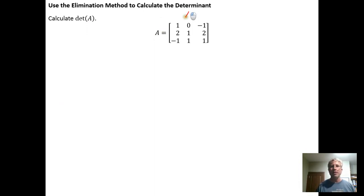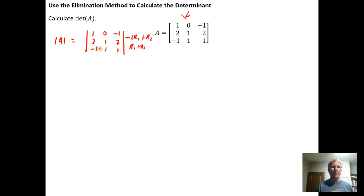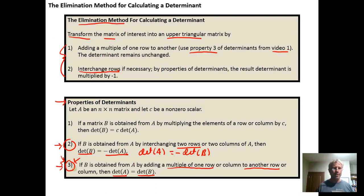Here's an example. Let's say we want to find the determinant of this matrix. We'll convert it into an upper triangular matrix using these properties. The determinant of A equals the determinant of the matrix with entries 1, 2, −1 / 0, 1, 1 / −1, 2, 1. We notice that taking −2 times row 1 and adding it to row 2 gives a 0 in that position, and adding row 1 to row 3 gives a 0 in that position. Both moves use Property 3, so the resulting matrix has the same determinant as the original.